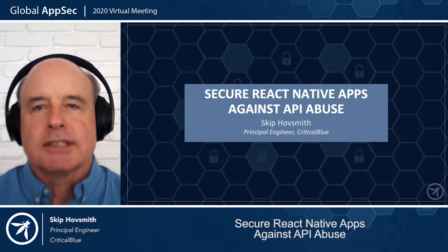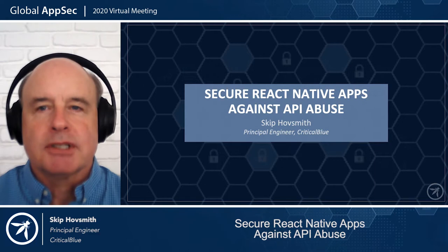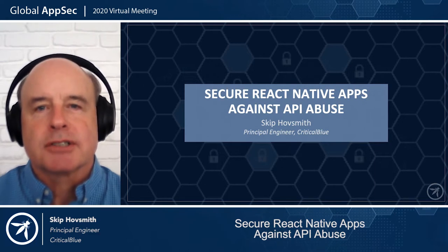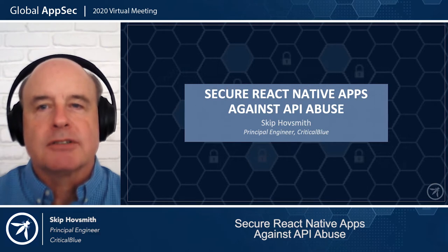Hi, thanks for listening today to my talk on securing React Native apps against API abuse. My name is Skip Hoffsmith, and I work at a company called Critical Blue on a security service called Approve. Approve works by authenticating mobile app integrity and securing API calls from those mobile apps.